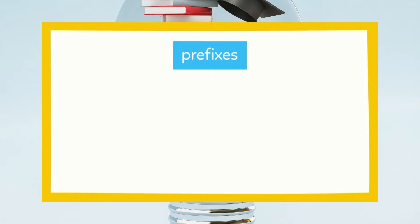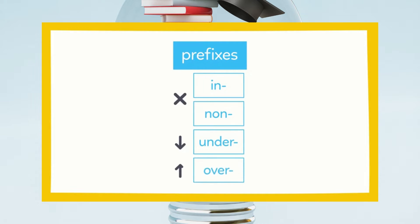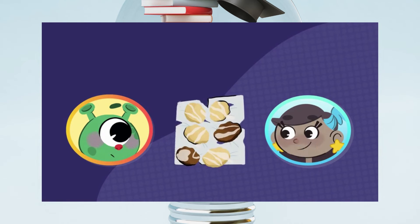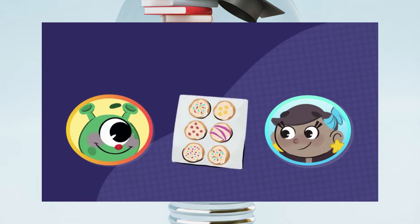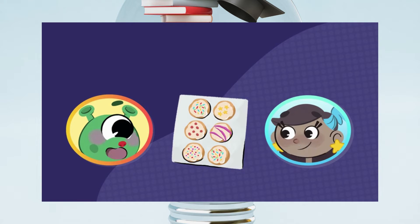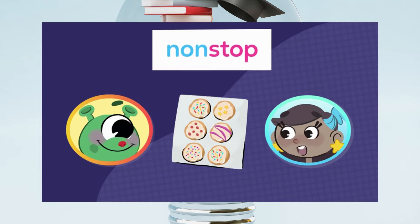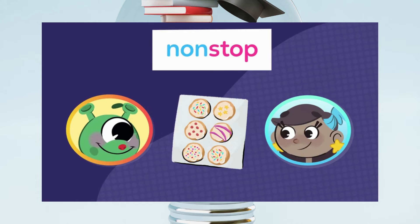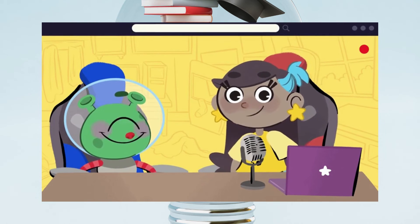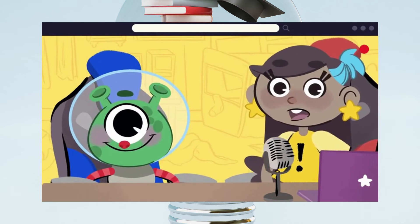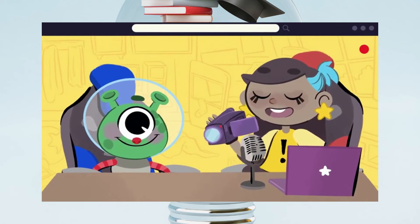Today, we learned how to define words that start with the prefixes in, non, under, and over. These cookies look terrible. Wow, now they look delicious! You want to eat them non-stop? Well, let's start with a few and go from there. Thanks for checking in with Sam and Spike. Like always, she's got the cam and he dropped the mic.